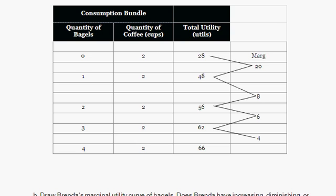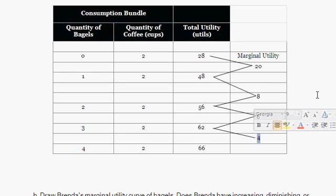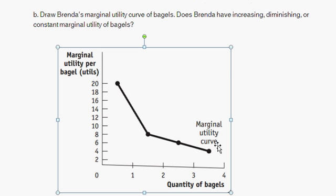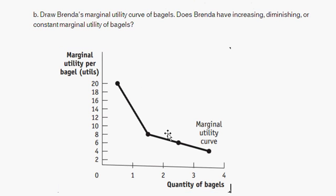Looking at the marginal utility column: from the zeroth to first bagel it's 20, from the first to second it's 8, from the second to third it's 6, and from the third to fourth the marginal utility is 4. So the marginal utility is definitely decreasing. Drawing the marginal utility curve for bagels — remember this graph holds the number of cups of coffee constant — we can see clearly that the marginal utility is decreasing as the quantity of bagels increases.